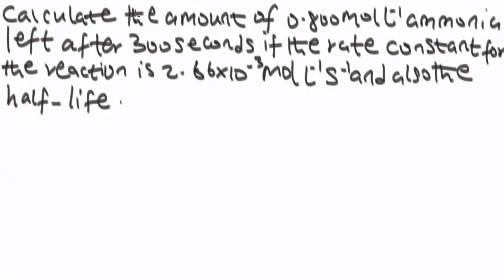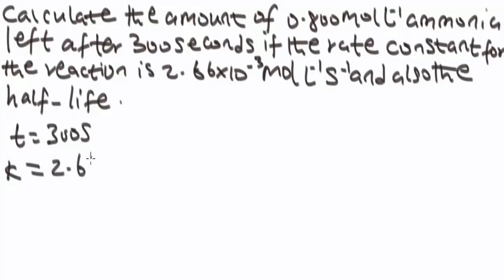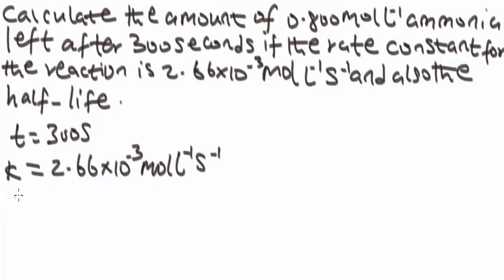Let's solve a problem. Calculate the amount of 0.800 molar ammonia left after 300 seconds if the rate constant for the reaction is 2.66 times 10 to the power minus 3. Also find the half-life. In this question, our t is 300 seconds, and our zero order rate constant k_0 is 2.66 times 10 to the power minus 3.